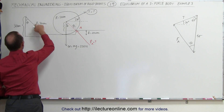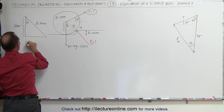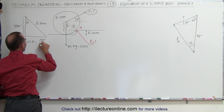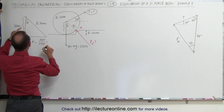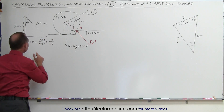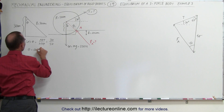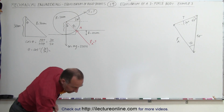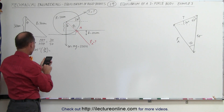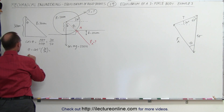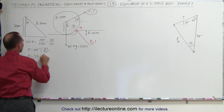Now we have the hypotenuse and the adjacent side to the angle. The cosine of theta equals the adjacent side divided by the hypotenuse, so cosine(theta) = 30/50 = 0.6. Therefore theta = arccos(0.6) = 53.13 degrees.